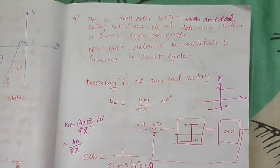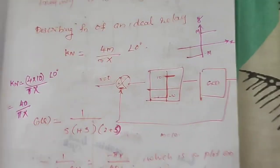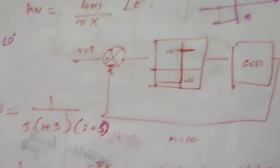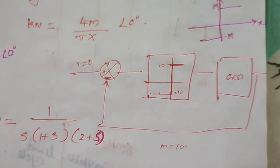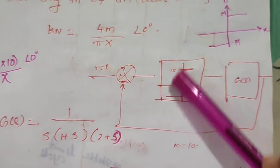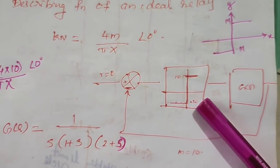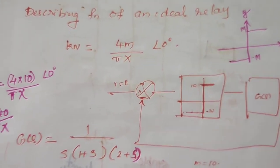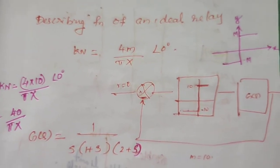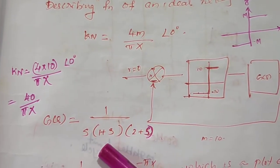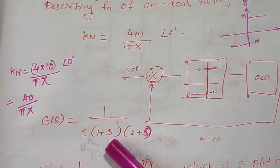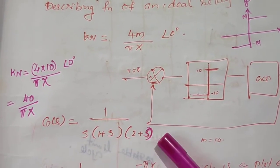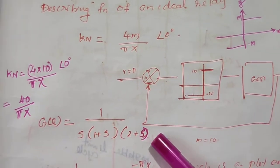In this problem you can see the relay — an ideal relay — and G(s), the linear element. The equation for G(s) is: G(s) = 1 divided by s times (1 + s) times (2 + s).